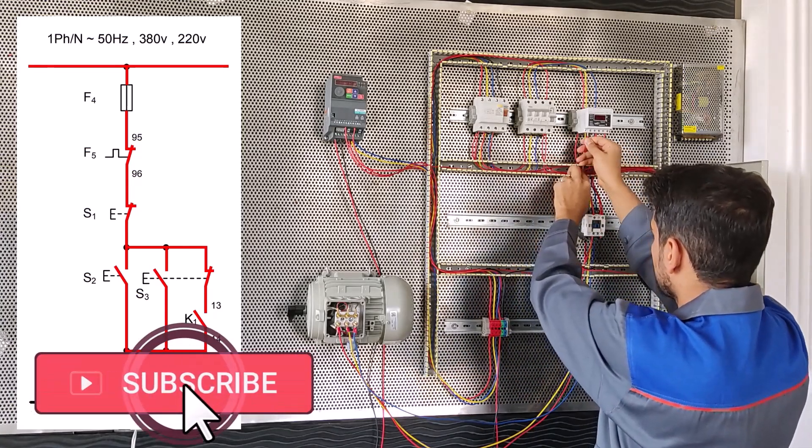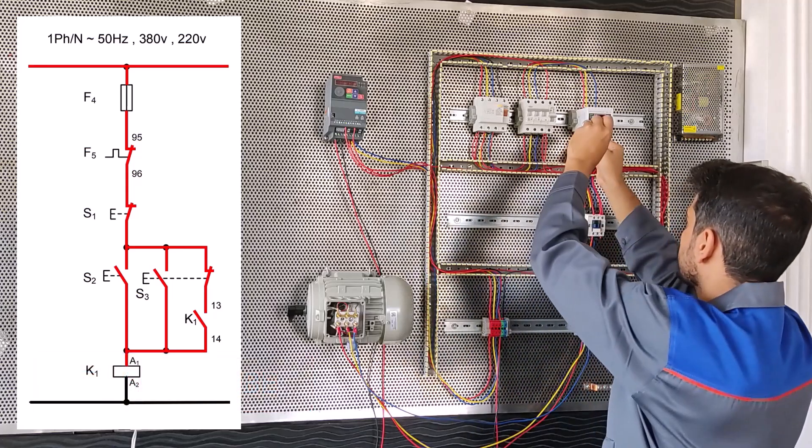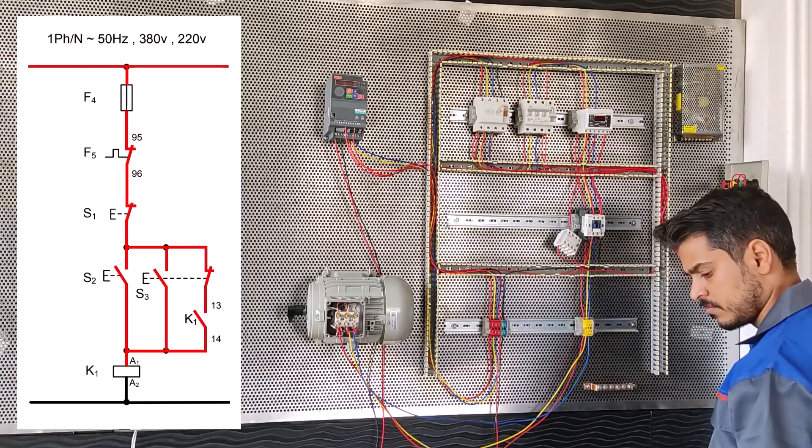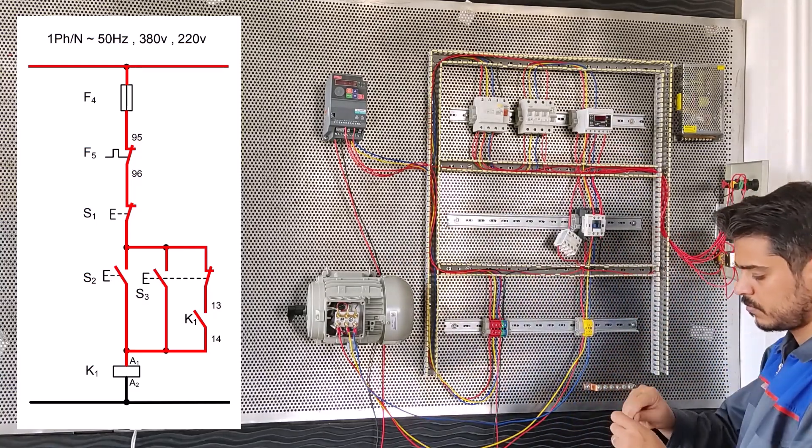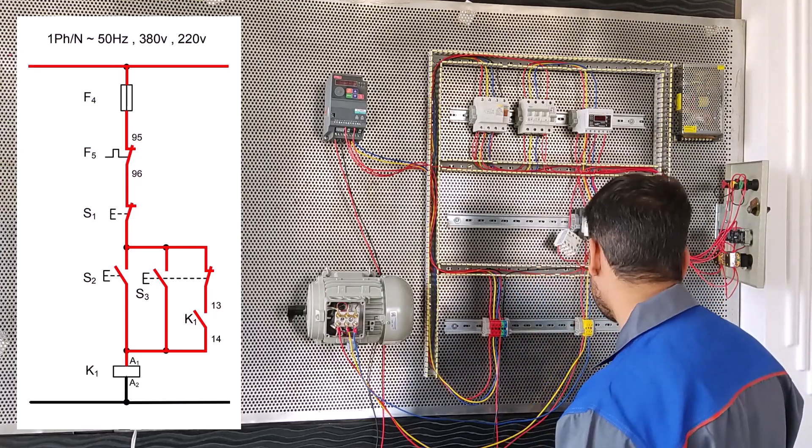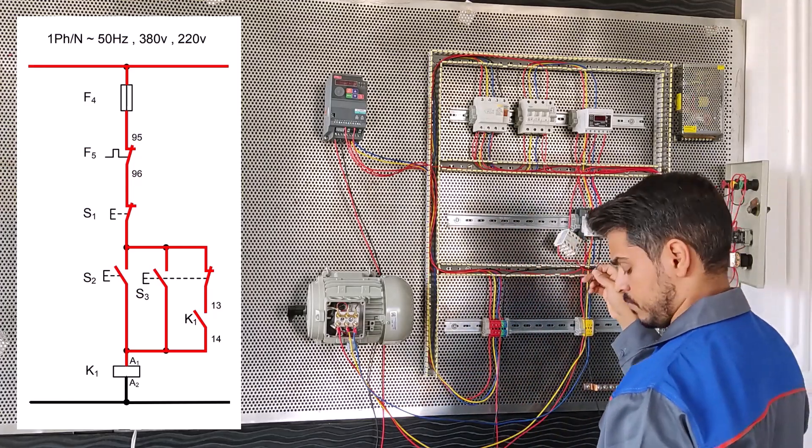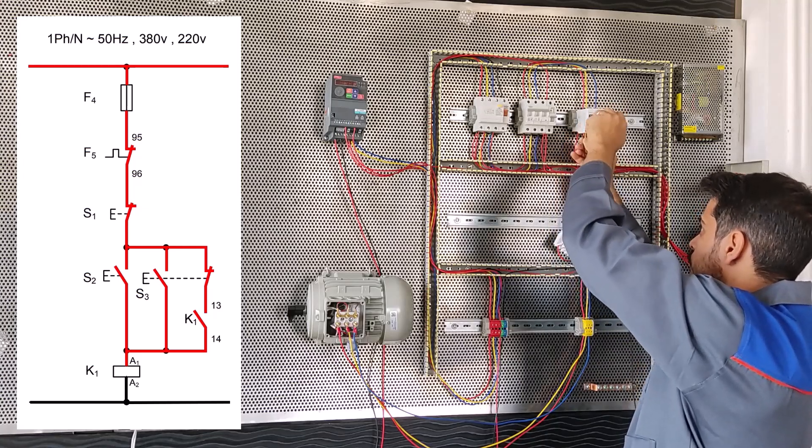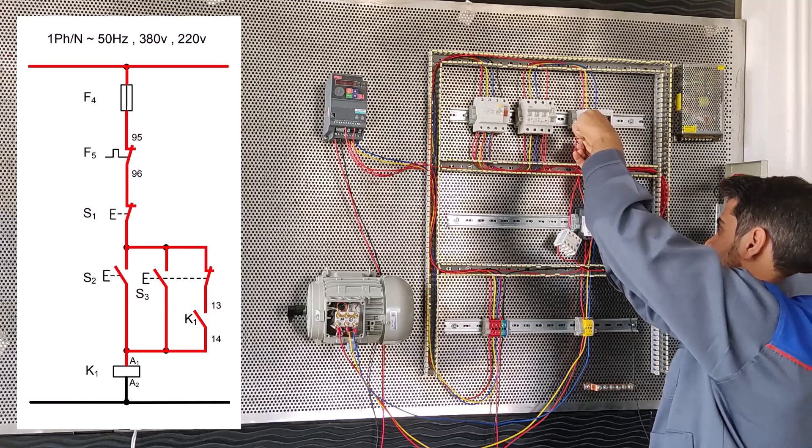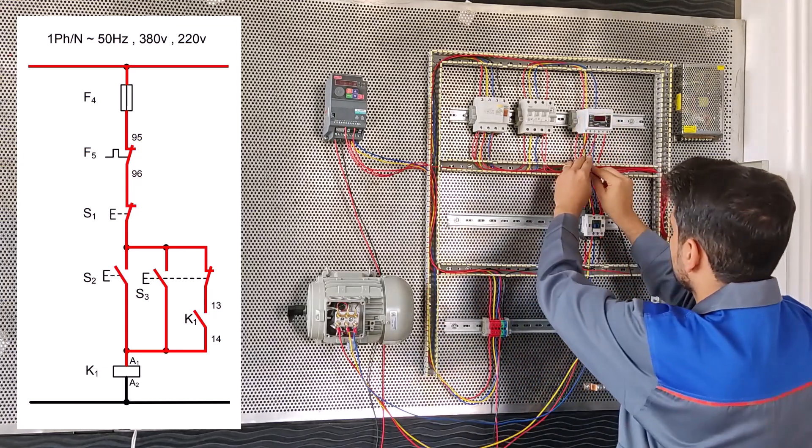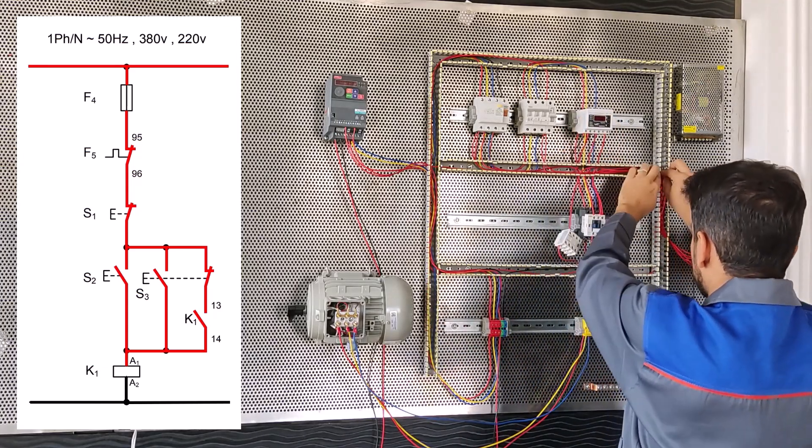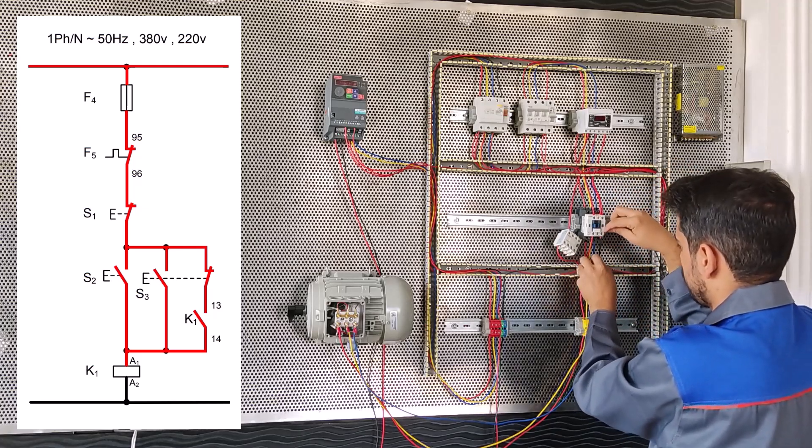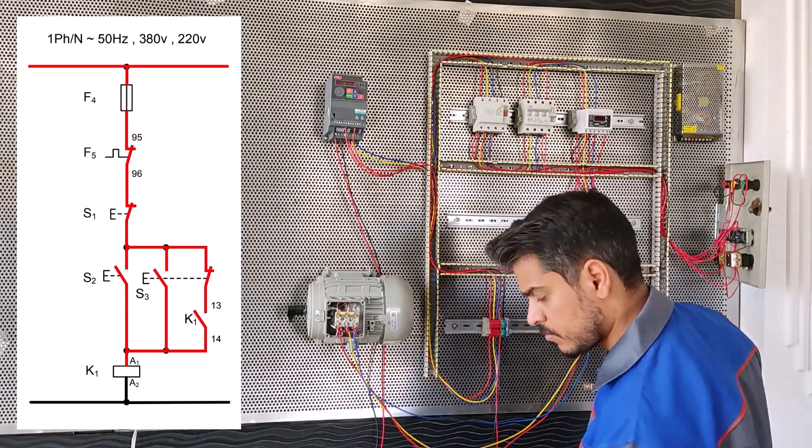From base 2, we connect the load control to the load control. From here, the base N on the load control to the A2 to the conductor K1.